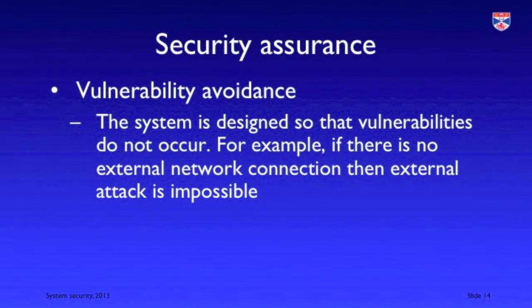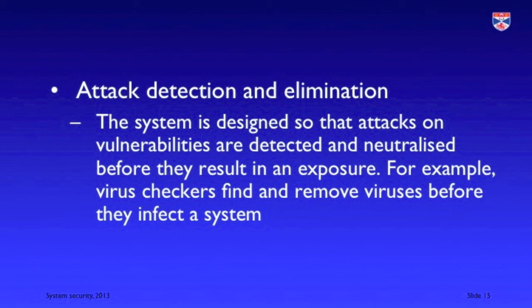As with both safety and reliability, the most effective way to ensure that problems don't arise is to avoid them in the first place. The most important way to avoid problems is to avoid vulnerabilities. Vulnerability avoidance is essential for system security achievement. We must accept that it's impossible to avoid all vulnerabilities, and because systems are socio-technical systems, technical measures alone cannot guarantee that a system will be secure. We need to put in place attack detection and elimination features where from within the system we can detect an attack and take actions to eliminate that attack before it causes damage.